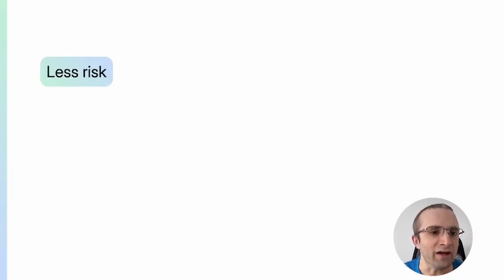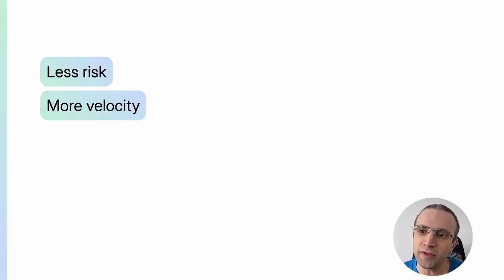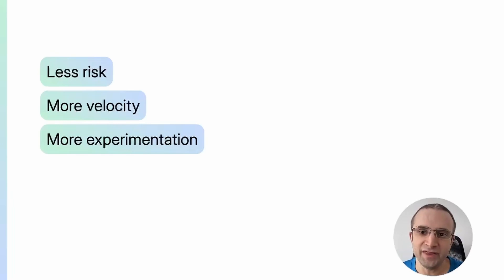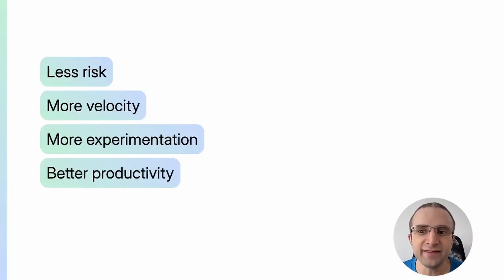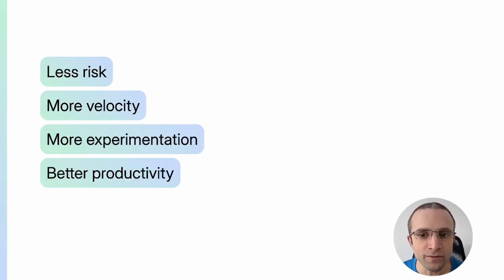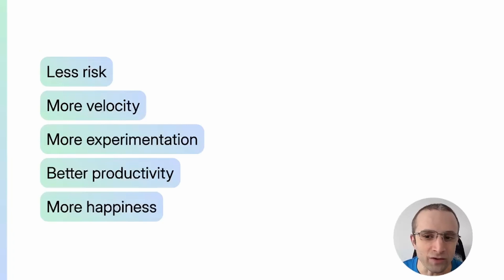Less risk, because we have a safety net of tests that will catch errors before they reach production. More velocity — we can move faster because we have a feedback loop that tells us when things go wrong or right. More experimentation — we can even do A/B experiments to figure out which features work best for the user. Better productivity, as the whole system is designed to give a satisfying experience, taking away chores from developers and letting them do interesting work. And more happiness — a good CI/CD pipeline will make developers more productive, faster, and overall happier.